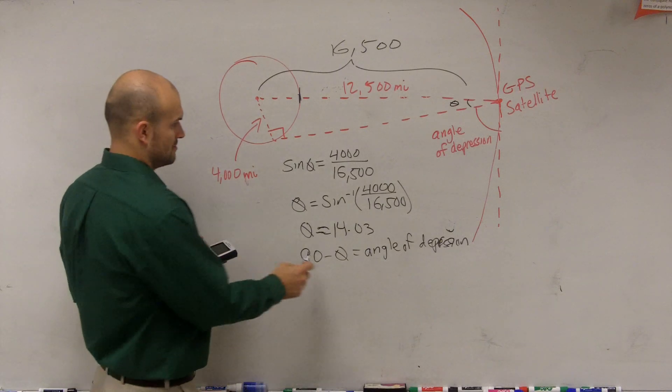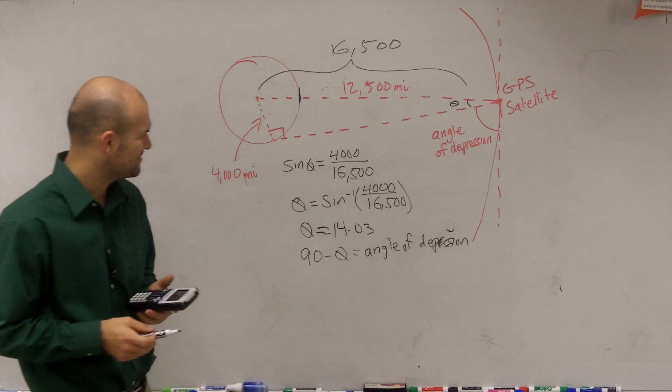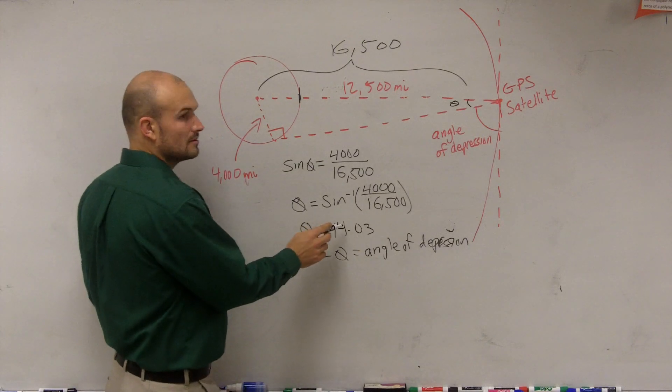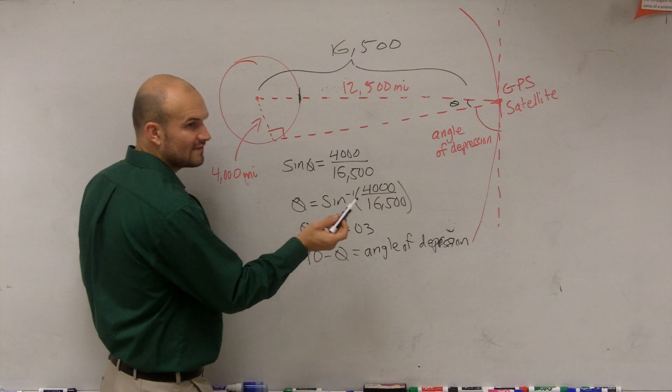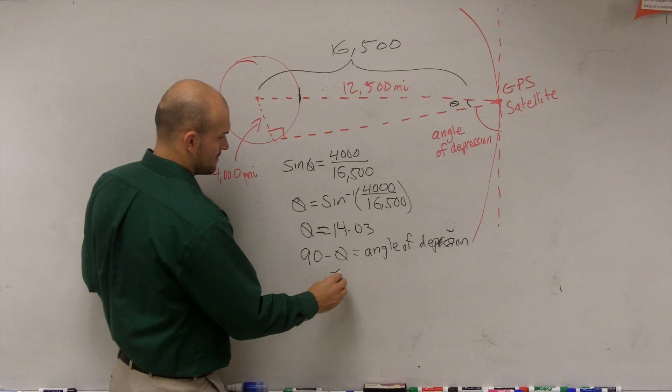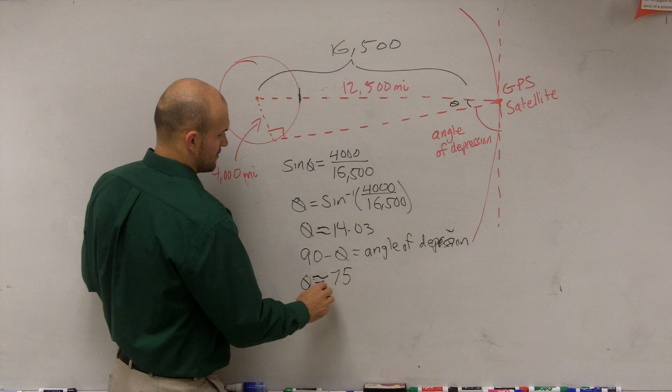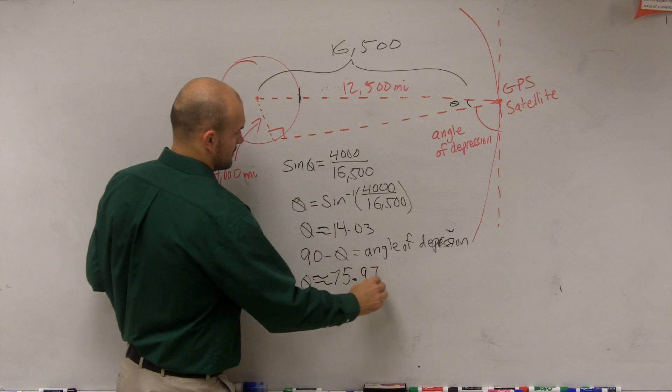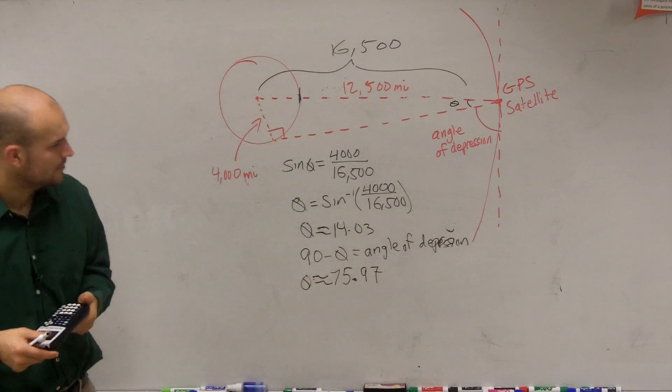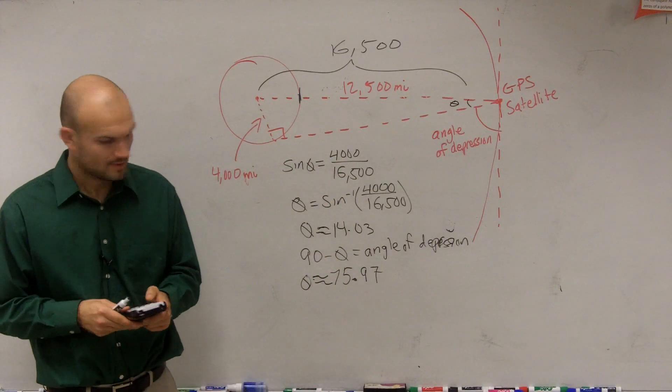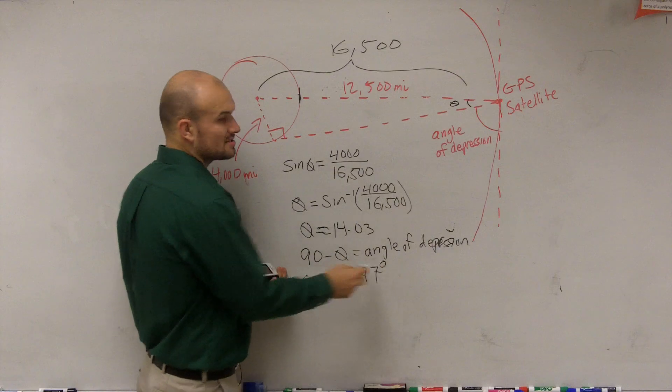Right? 75? What am I thinking about? Well, it's going to be... It's 75.97. Yeah. We're going to leave it just to two decimal places because that's what I'm going to do. OK? So that would be your angle of elevation. Does that make sense?